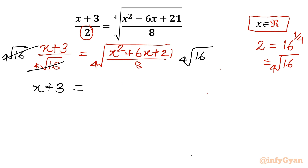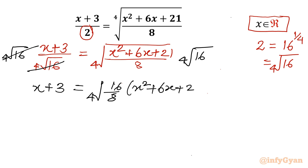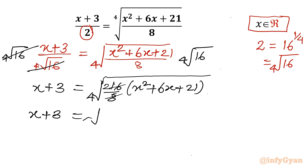On the right hand side, both roots are 4th roots, so we can club them all together and write it as the 4th root of 16 over 8 times the quantity x squared plus 6x plus 21. Now 16 over 8 is 2, so ultimately we get the equation x plus 3 equals the 4th root of 2 times the quantity x squared plus 6x plus 21.